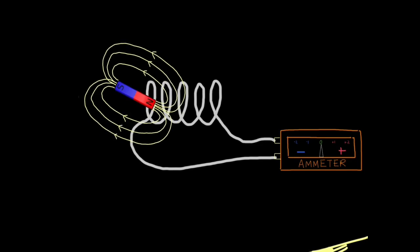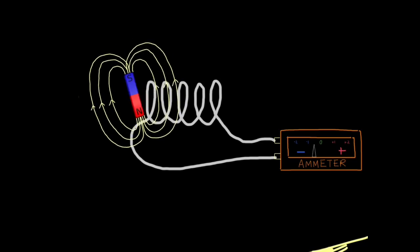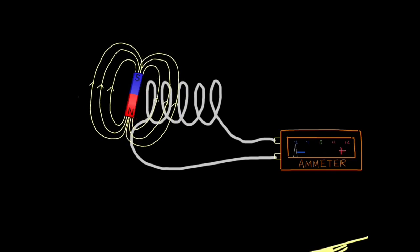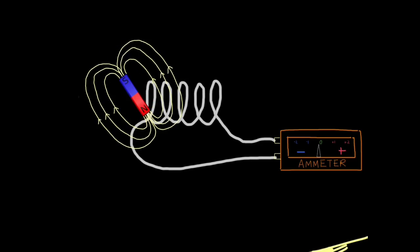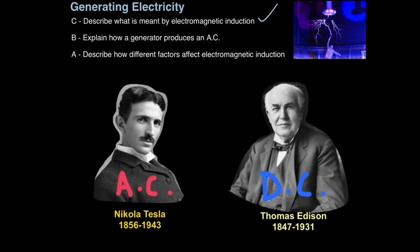But remember the most important point: if we rotate those field lines north pole to south pole to north pole to south pole near a conducting wire, we produce an alternating current. And that is the basis of an AC generator. So now we can explain how a generator produces an alternating current.